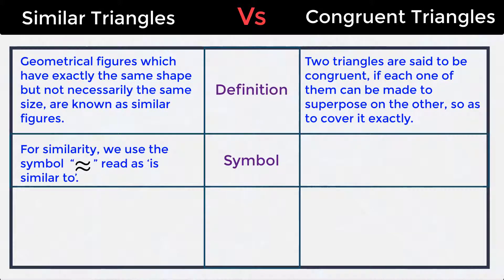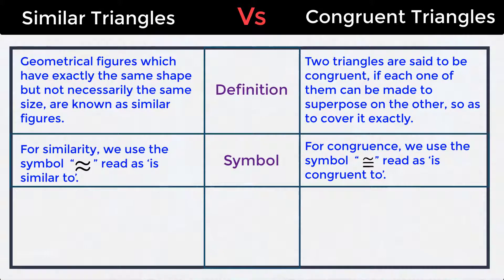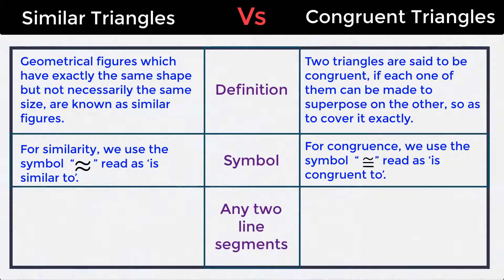For similarity, we use the symbol read as 'is similar to.' For congruence, we use the symbol read as 'is congruent to.'